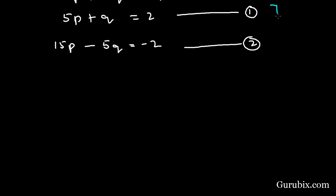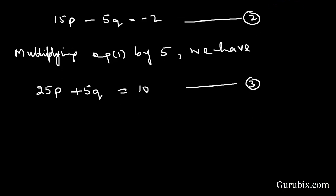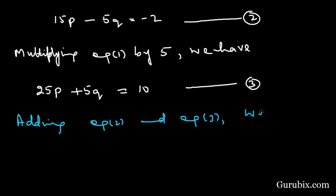Now we shall use the elimination method to solve these equations. For that, we multiply equation number 1 by 5, giving 25p plus 5q equals 10 — let this be equation number 3. Now we shall add equation number 2 and equation number 3: 15p minus 5q plus 25p plus 5q equals minus 2 plus 10.